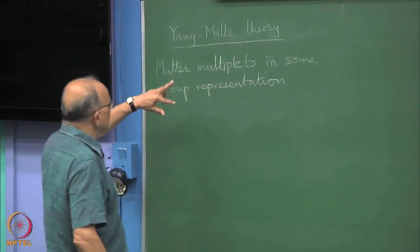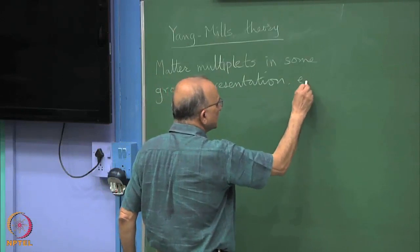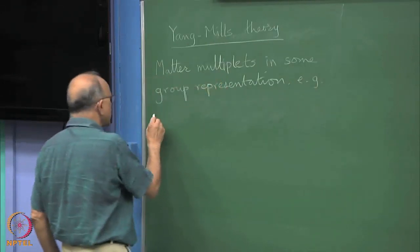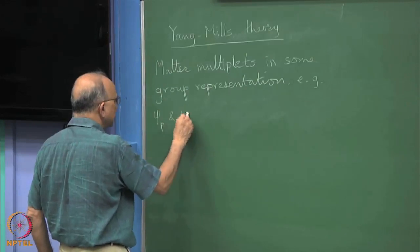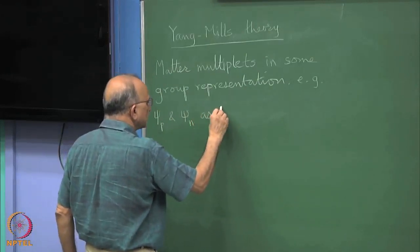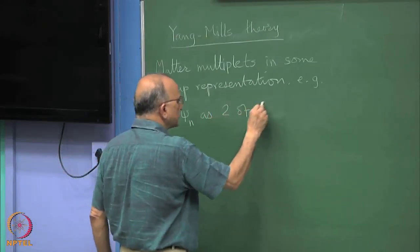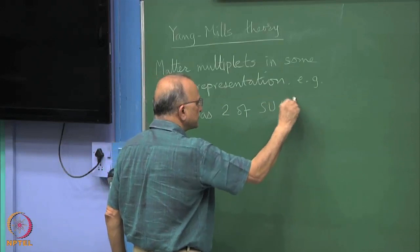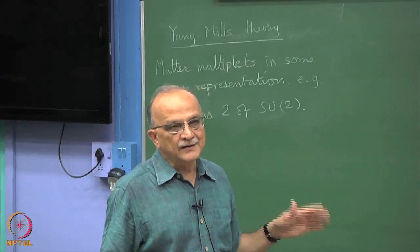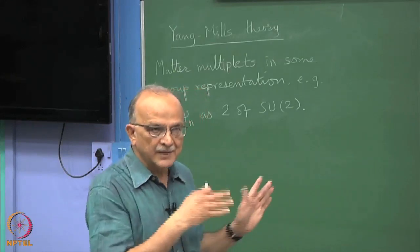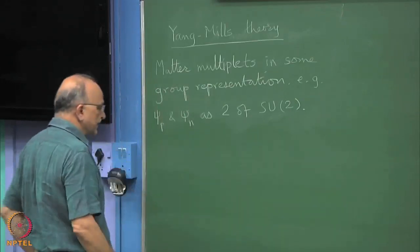And so, matter multiplet means in some group representation, for example, proton and neutron as spin 2 of SU(2) and this is what we will deal with, this is the simplest case. You can deal with higher representations by a simple generalization of group theory rules.